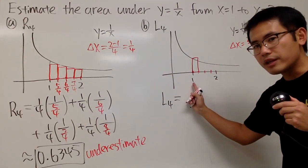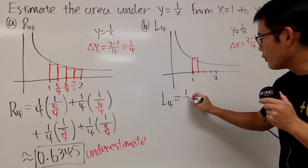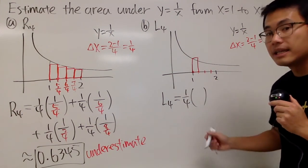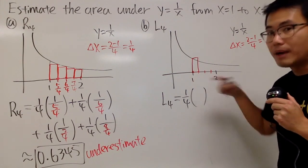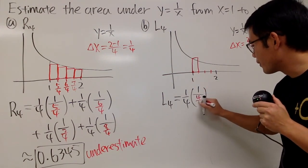So in fact, this right here is the x value that we are using. So let me do it like this. The width is 1 over 4, and then we multiply by the height. The height is 1, but let me write it as 4 over 4: 1 over 4 over 4.